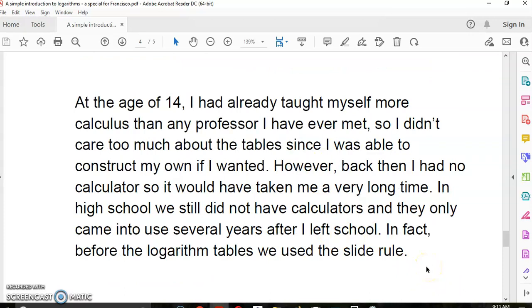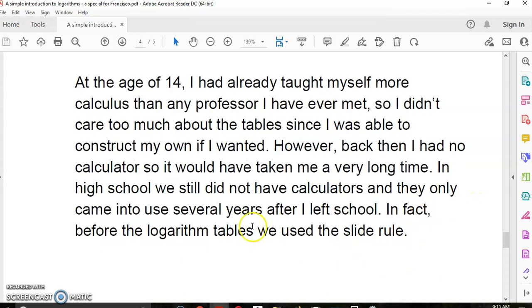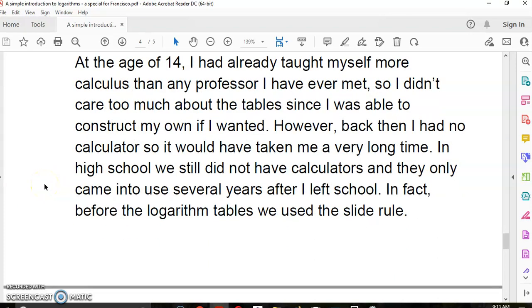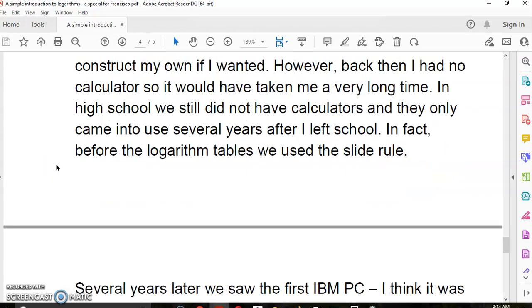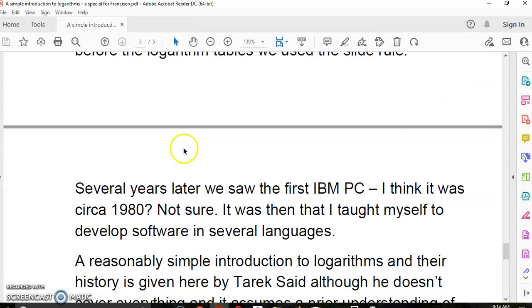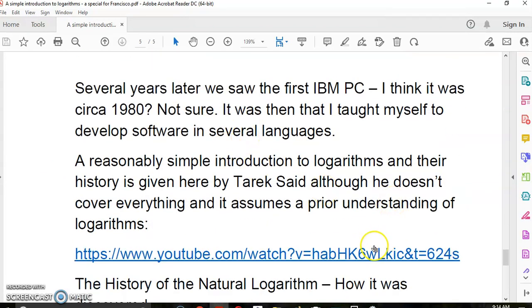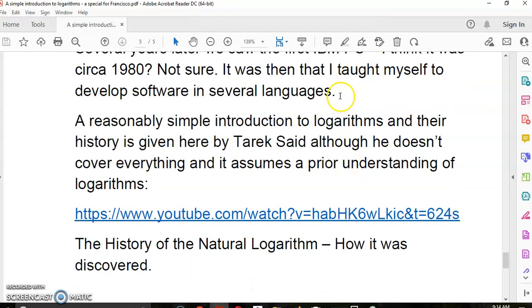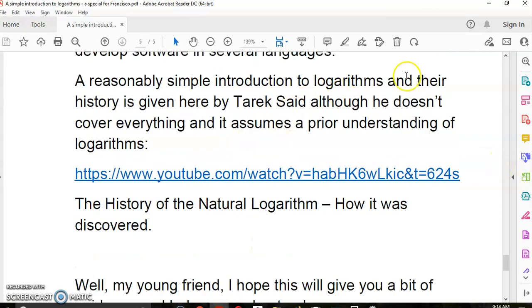If you've done a course at university, you can actually construct your own tables, especially now that you have computers and you can program them to find these values very fast and accurately. But of course, even that is not necessary. So I, at the age of 14, had already taught myself calculus. I knew much more than any professor I'd ever met. If I didn't have computers and calculators back then, I did it by hand. It would have taken me an awful long time to create these tables. Being human, arithmetic is very error-prone. Several years later, after I left school, we saw the first IBM PC, I think that was in around 1980. It was then that I taught myself to develop software in several languages. That eventually became my main vocation for the next 26 years or so.